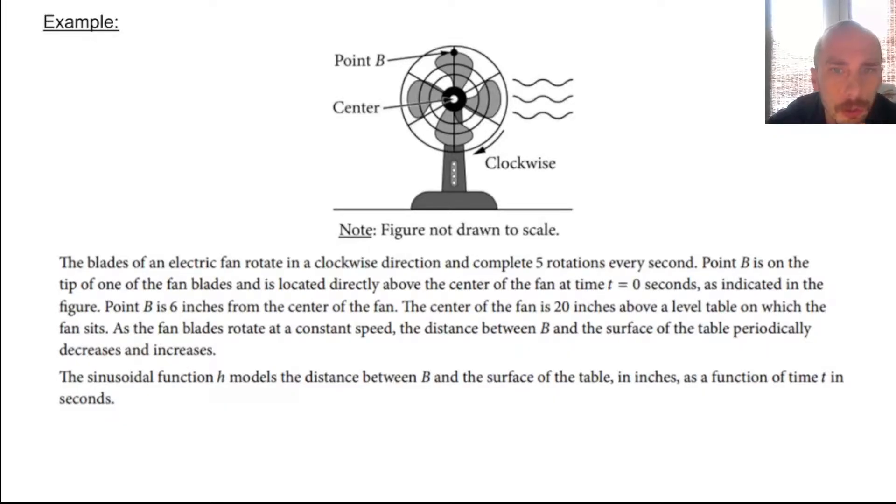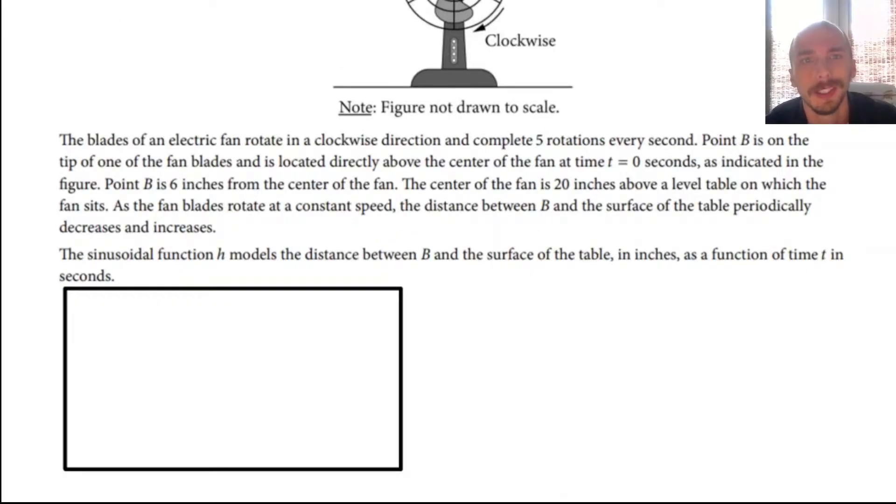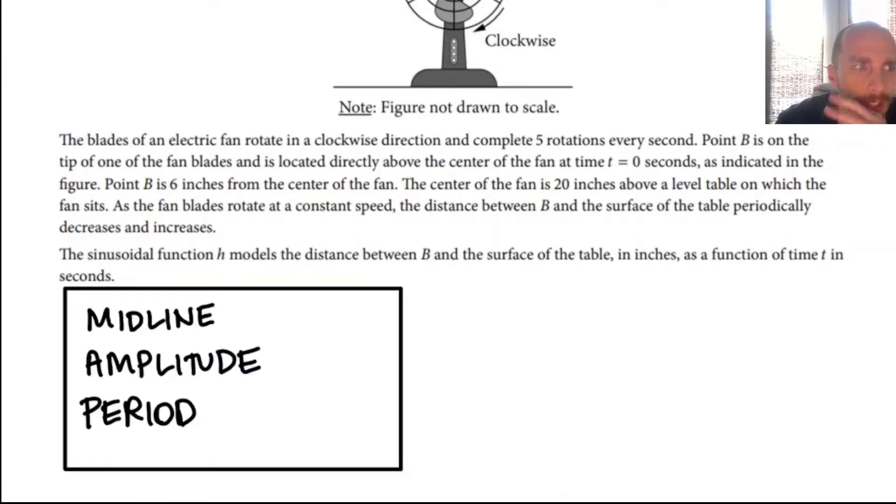So I think we need to go through the paragraph of text and extract the information that we need. But maybe before I go to fill in this box with all the requisite information, I should probably point out that the function, which is always going to be H of T on this problem, it's always going to be H. So I would expect it's probably going to be a height of something. The sinusoidal function H models the distance between B and the surface of the table. So it makes a lot of sense that it would be a sinusoidal function because it's going to go from the top to the bottom, back to the top to the bottom. It's going to keep repeating itself.